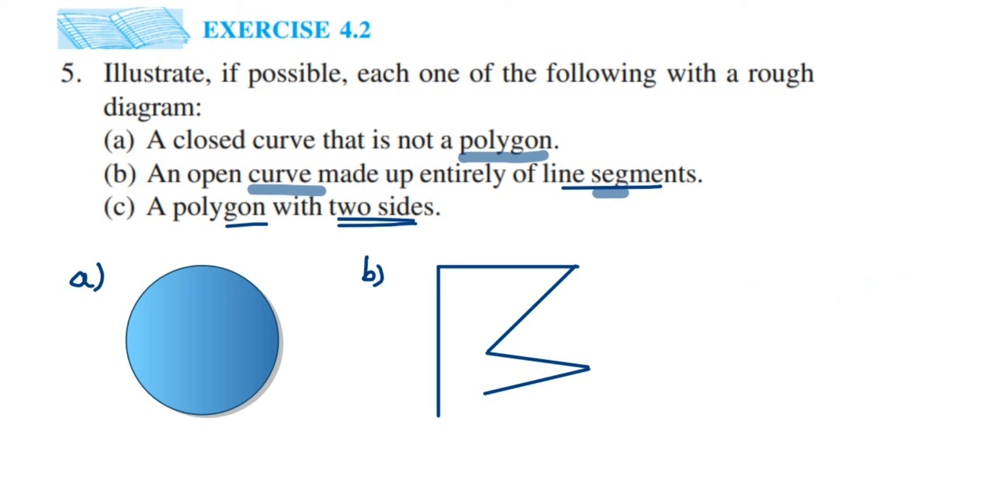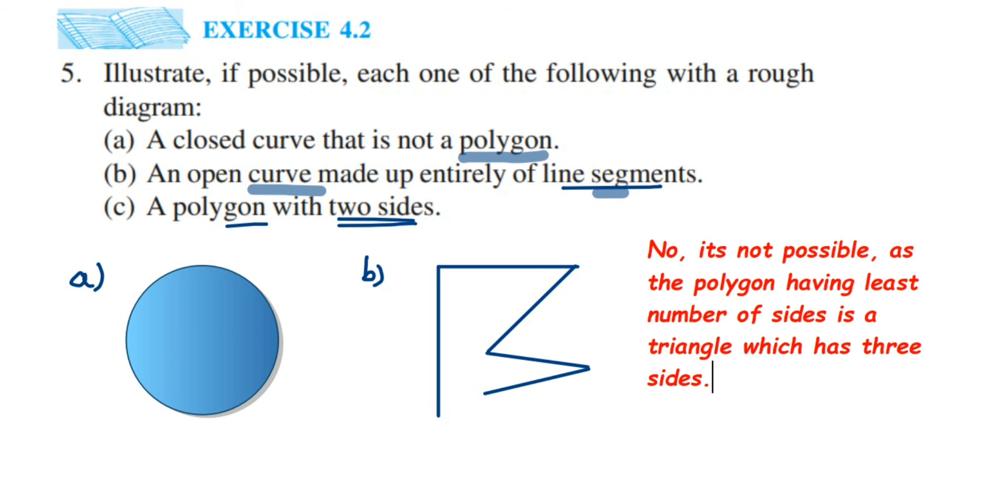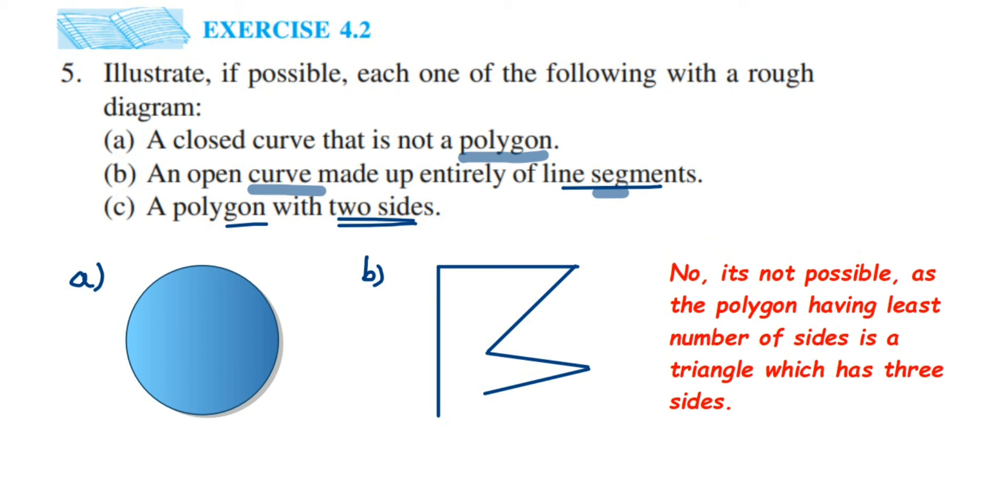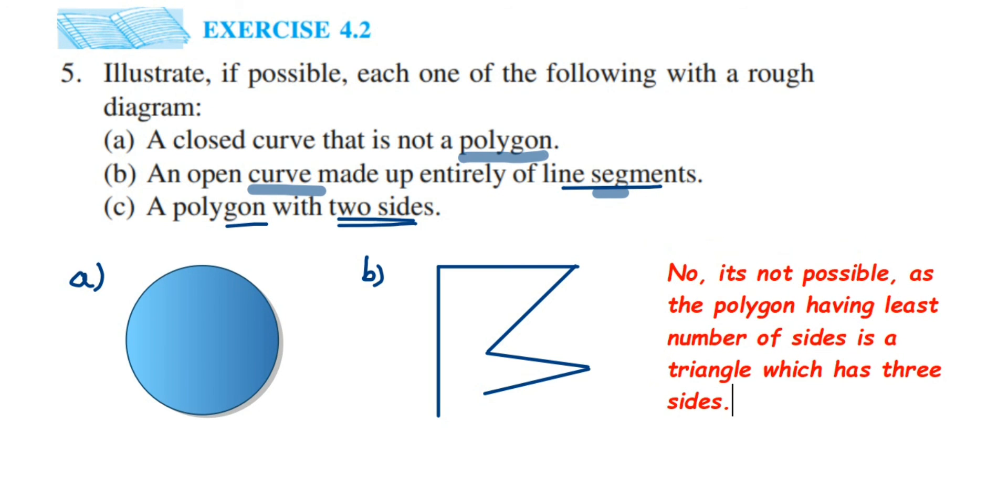If you want to draw a polygon it should minimum contain three line segments, that is to form a triangle. So the answer is it's not possible because to make a polygon we require minimum three sides that forms a triangle. But with two sides we cannot form it. So the answer will be no, it is not possible as the polygon having the least number of sides is a triangle which has three sides.